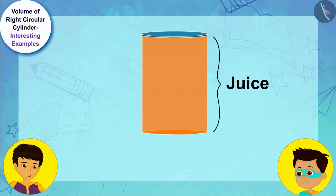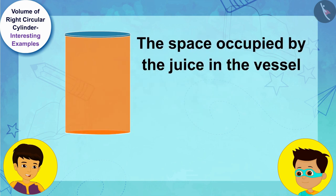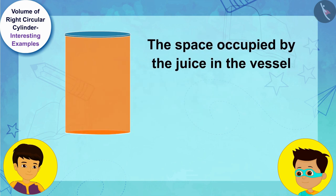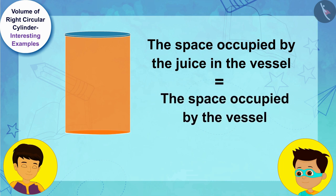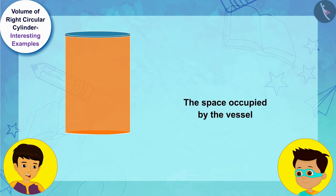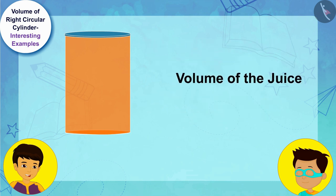And because the vessel is completely filled with juice and the thickness of the pot is negligible, the space occupied by the juice in the vessel is equal to the space occupied by the vessel. In other words, the volume of the juice is equal to the volume of the vessel.